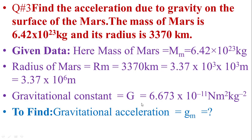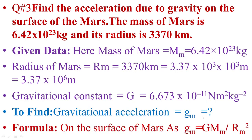To find the gravitational acceleration on Mars, we write: gravitational acceleration on Mars gm equals the value of small g on Mars. The formula: on the surface of Mars, the value of g is equal to capital G, the gravitational constant, multiplied by mass of Mars, divided by radius squared. Now putting the values of G, mass of Mars, and radius.